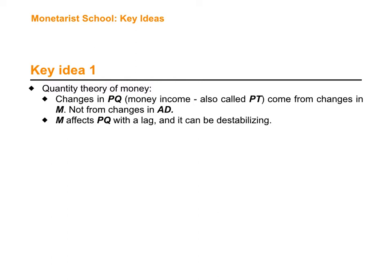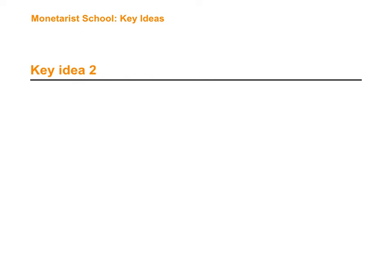Changes in the money supply can destabilize the economy — they can affect prices, affect signals in the market, and create high periods of inflation and even hyperinflation. So Friedman proposed a monetary rule: increasing the amount of money in the economy in a consistent, standard way at the same rate every year, according to the expected rate of growth of the economy. For example, if the economy was going to grow 3%, then the money supply should also increase 3% every year.